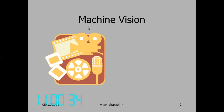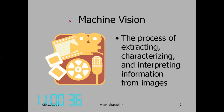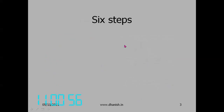So we learn what machine vision is. It is defined as the process of extracting, characterizing, and interpreting information from images. This is the definition of machine vision in the book by Gonzales. Machine vision generally consists of six steps.